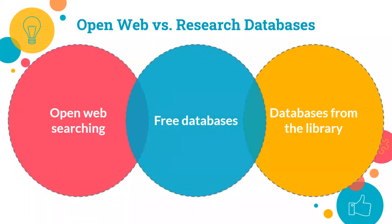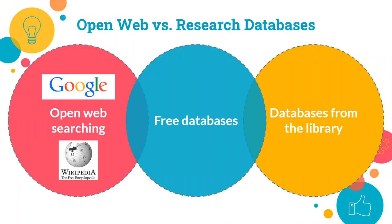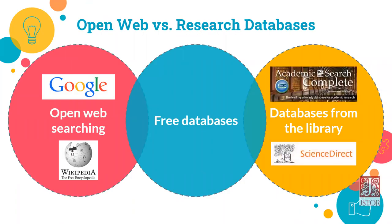Library databases hold scholarly articles that are not available to the general public and are more credible than most open websites that you might find with a Google search. A Google search is great for finding background information or getting quick facts about a topic. While you should never depend on a source like Wikipedia for your college research, it can be a place to get a quick understanding of a topic before moving on.